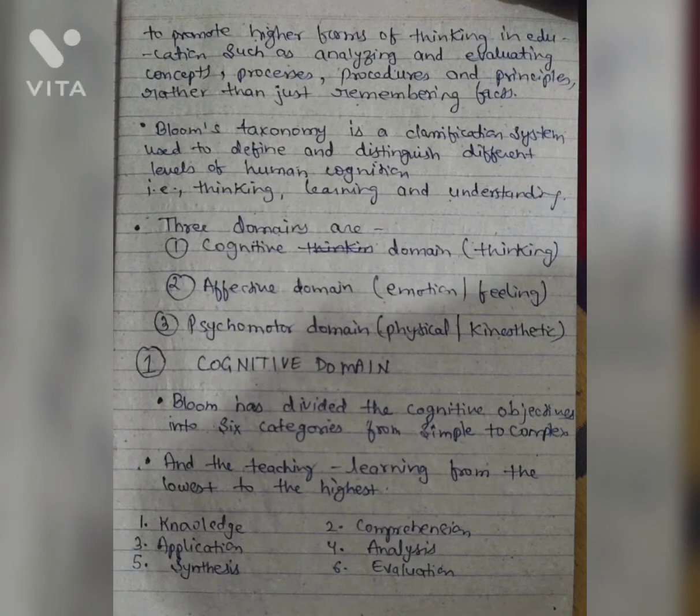learning, and understanding. Three domains are: Cognitive Domain — Thinking; Affective Domain — Emotion and Feeling; Psychomotor Domain — Physical and Kinesthetic.